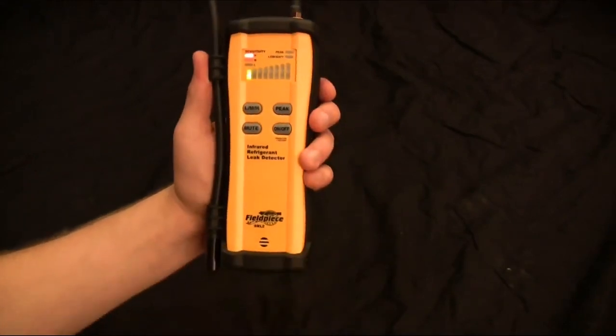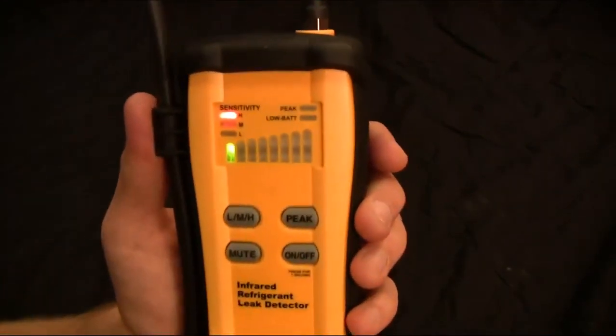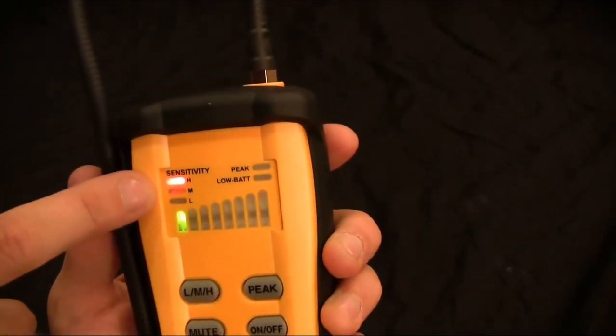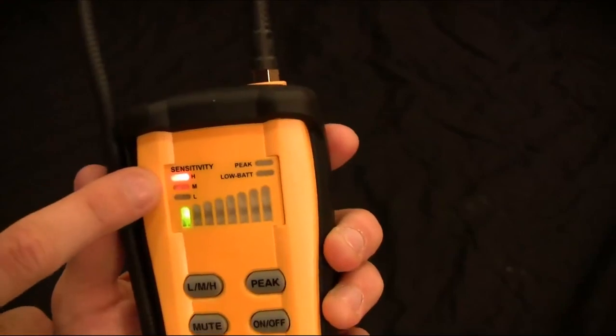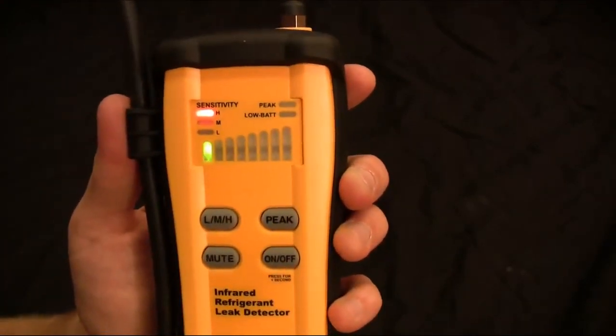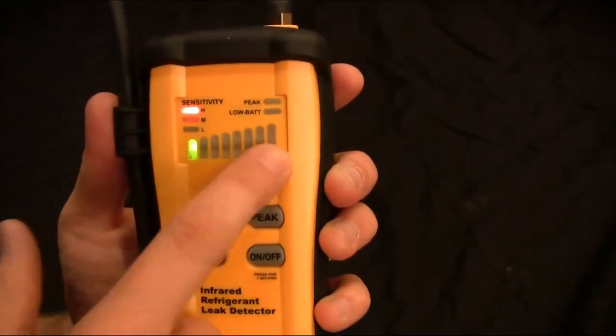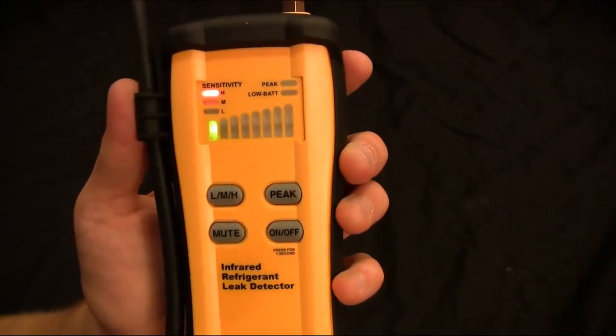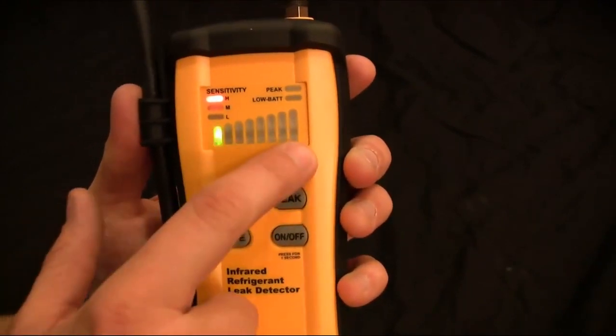Alright, let's go over the features on the display. So first looking at the LEDs, we have what sensitivity level you're on. We have high, medium, and low. There's also a turbo mode, which I will talk about in just a second. Now the bar graph shows you how big of a leak you have. The bigger the leak, the higher you'll go on the bar graph.